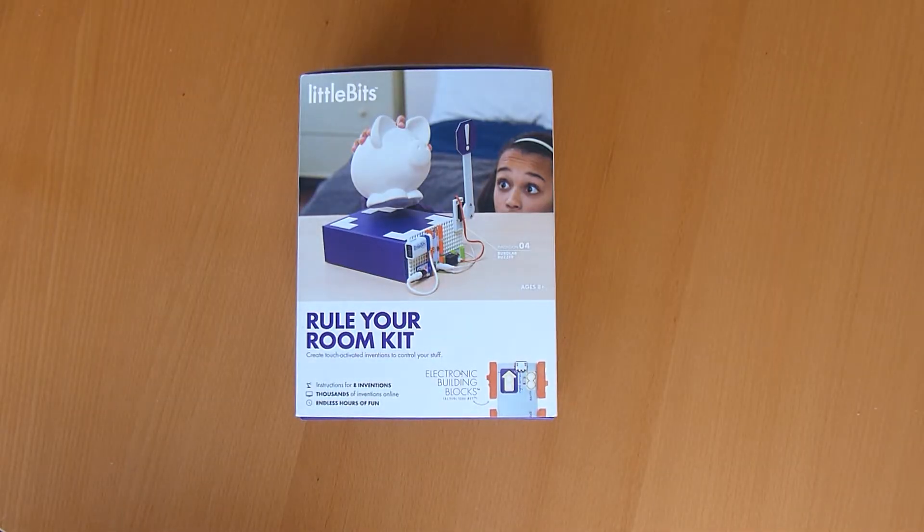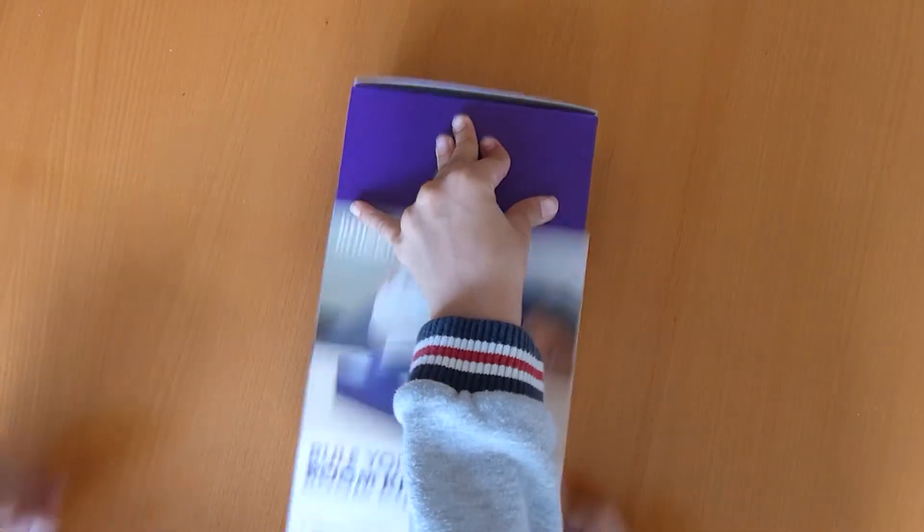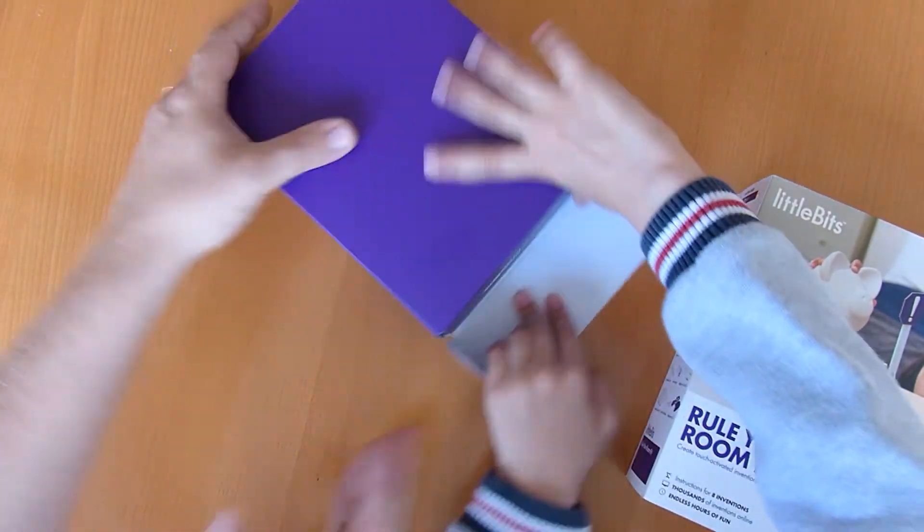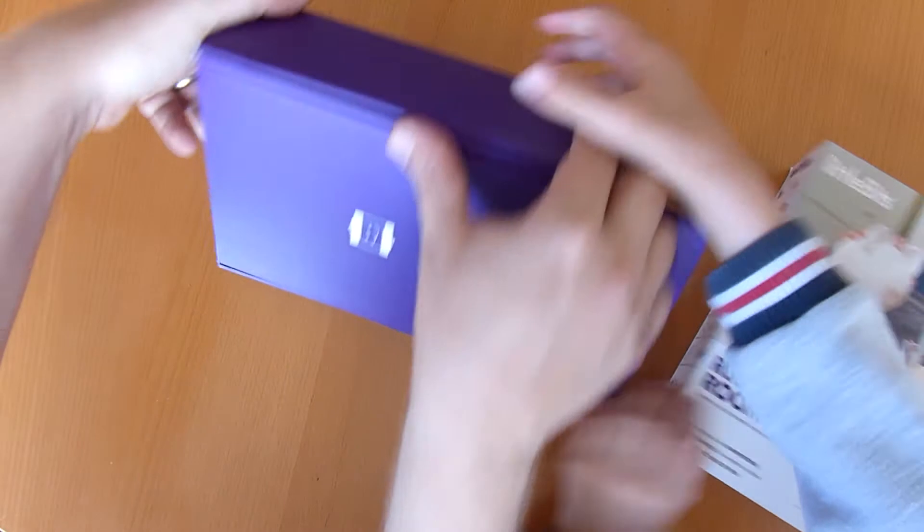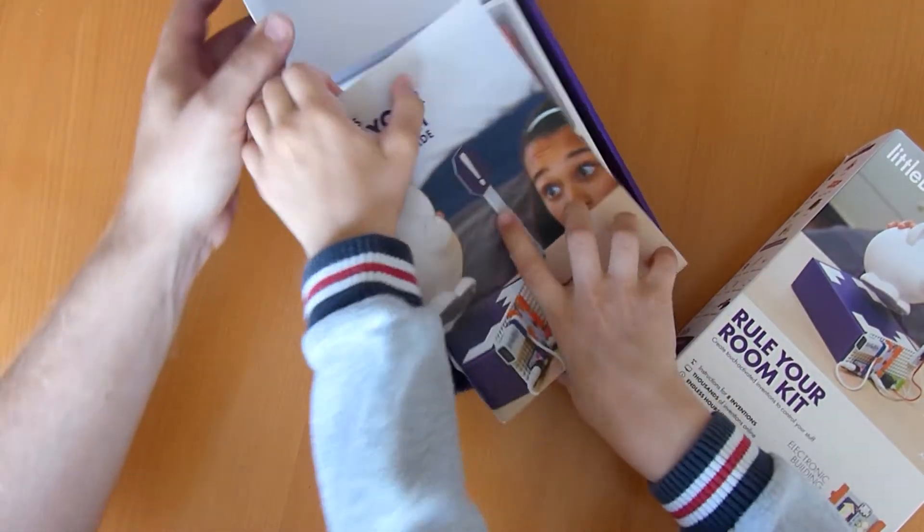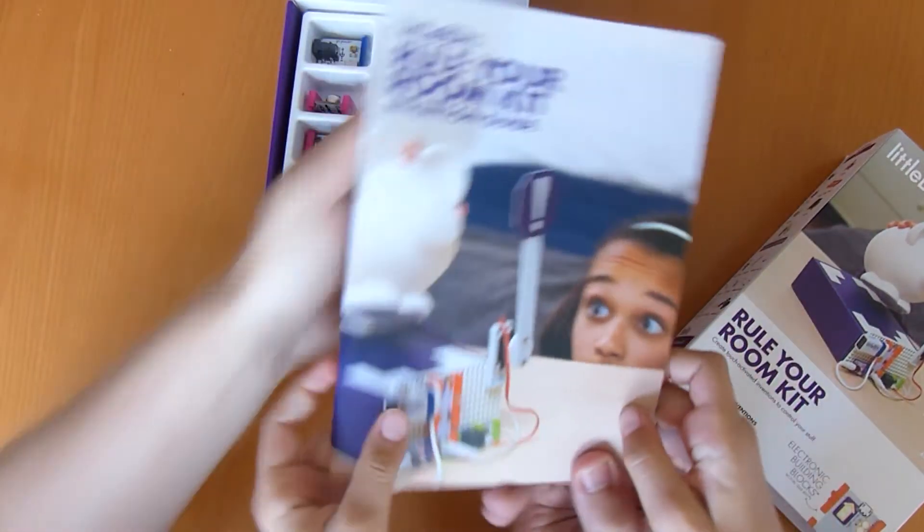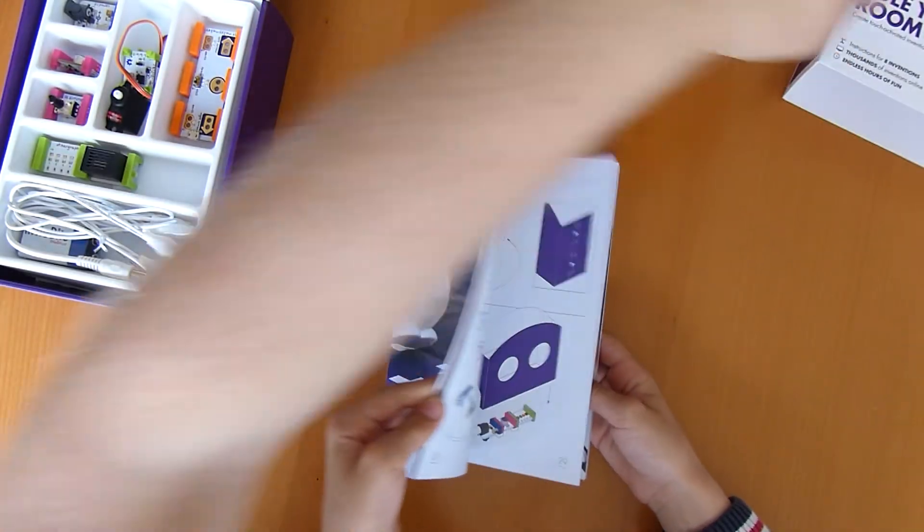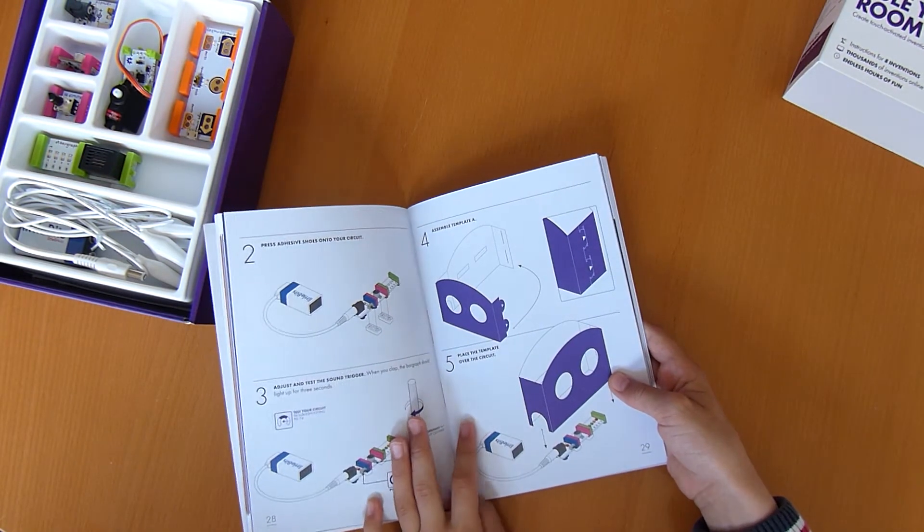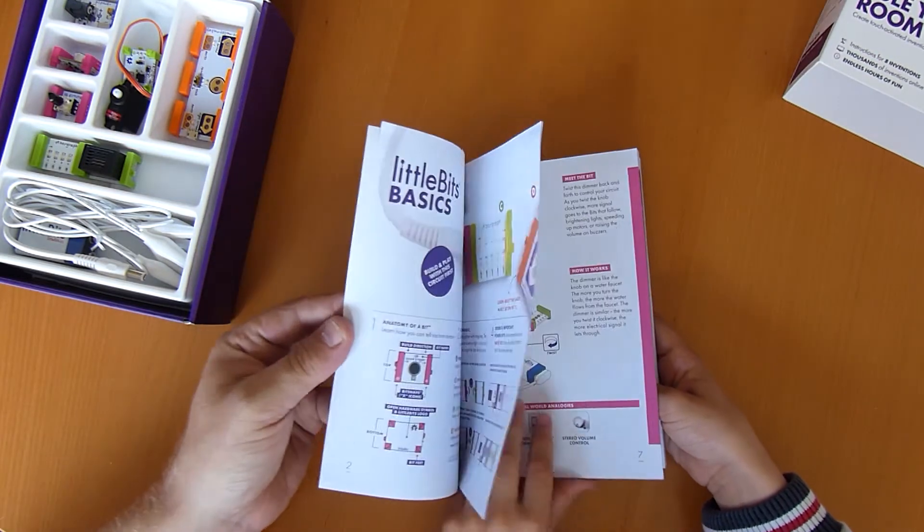So here's the kit, we're going to open it up and have a look inside. Okay, so what's the first thing we've got? We've got a little book that tells you what you can make. How does it start? Has it got some introductions?